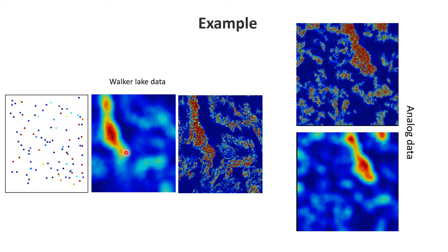What I'll do here is essentially extract the variogram information not from the Walker Lake data itself, but look at some kind of analog that's exhaustive — and this is not an uncommon practice. In practice, you may say: what if I have a certain porosity model, and I forward simulate on that porosity model some geophysical data? We can expect that geophysical data will smooth out a lot of the porosity. So I'll be extracting all of the variogram information from these maps and applying it into the actual world.